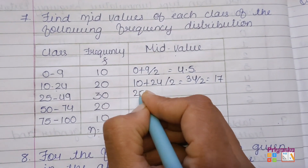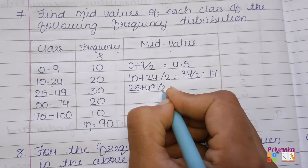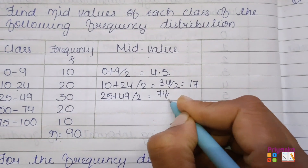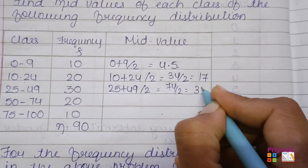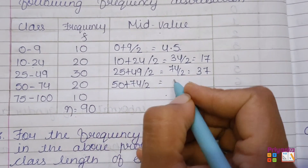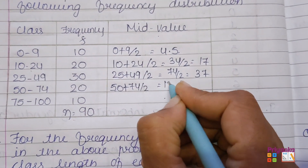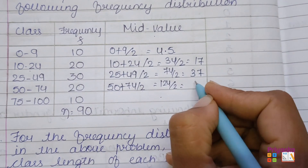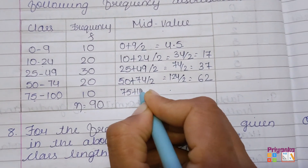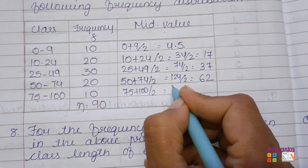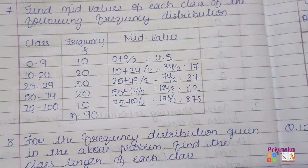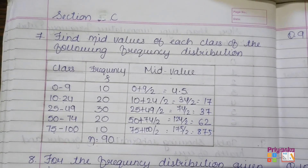Next, 25 plus 49 divided by 2, that is 74 divided by 2, here you will get the answer 37. Next, 50 plus 74 divided by 2: 50 plus 74 is 124 divided by 2, you will get 62. Next, 75 plus 100 divided by 2, that is 175 divided by 2, you will get 87.5. So here we found the mid value from the information given in question number 7.